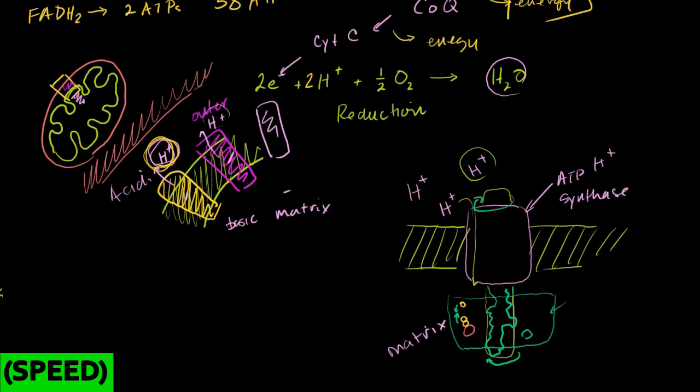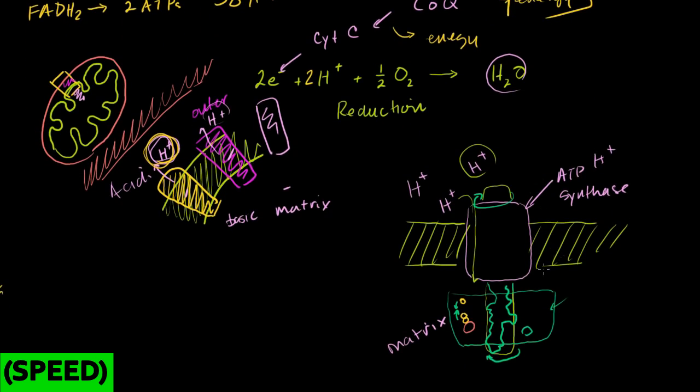And then the second part of the electron transport chain, or maybe we shouldn't even call this part of the electron transport chain, the process where the ATP is actually formed, the adding of a phosphate group to another molecule is called phosphorylation.